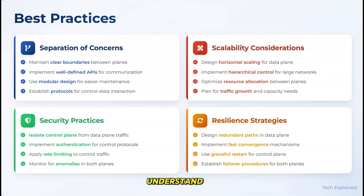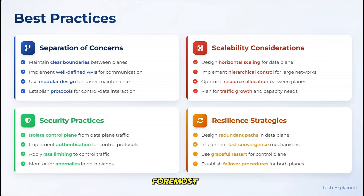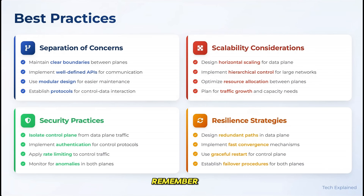Now let's discuss some best practices for implementing and managing data plane and control plane architectures. First and foremost is maintaining a clear separation of concerns — don't blur the lines between what the control plane does and what the data plane does; each should have well-defined responsibilities and interfaces. When it comes to scalability, remember that these planes scale differently: the data plane scales horizontally by adding more forwarding capacity, while the control plane often scales vertically by adding more processing power.